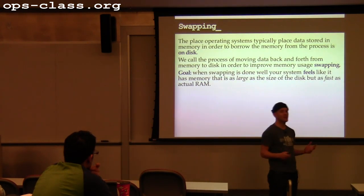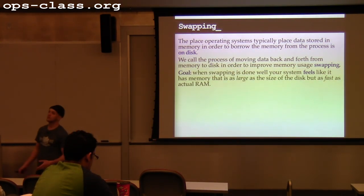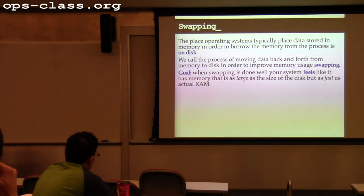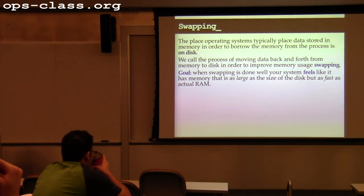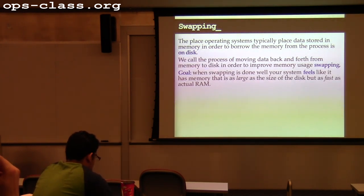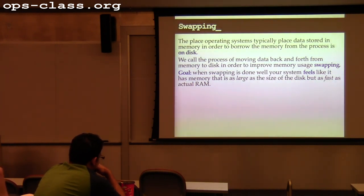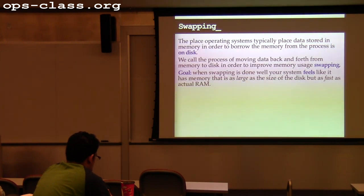The reason we use disk is not because it's persistent — it's because it's big. I usually have a much, much bigger disk than I have RAM — maybe one or two orders of magnitude bigger. So I have a lot of space there to use. We call this process of moving data back and forth swapping. When we do swapping well, we can make your computer feel like it has more memory equal to actual RAM plus the size of the swap file.